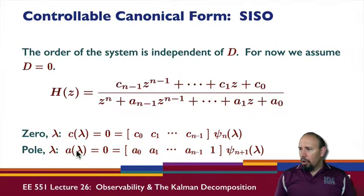At a pole, if lambda is a pole value, then a(lambda) is zero, in which case I have this row times this column. Notice I have n+1 here because the denominator in general is of order greater than the numerator.